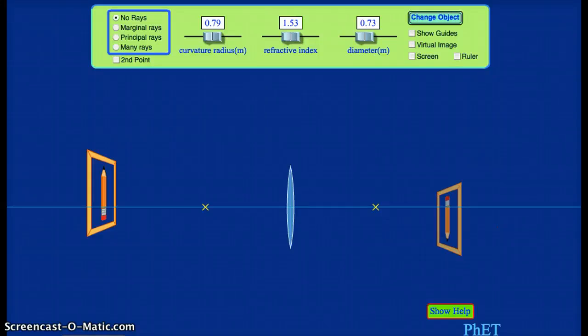Here we have a computer simulation of a converging lens that we can use to help us think about how the focal length of a lens relates to how much it converges light, converging in the case of a converging lens.